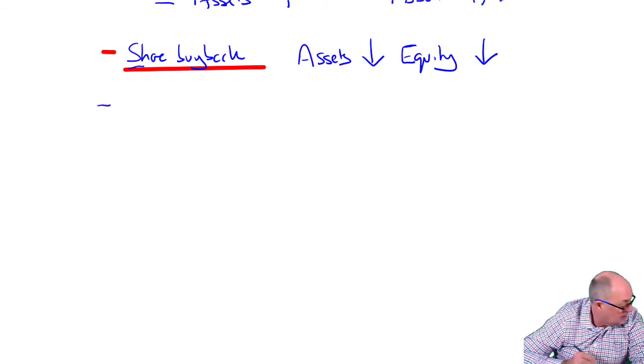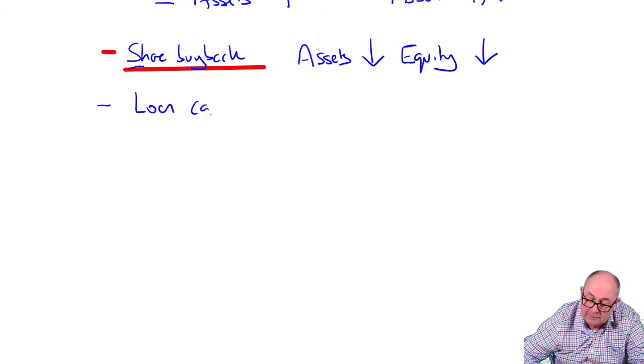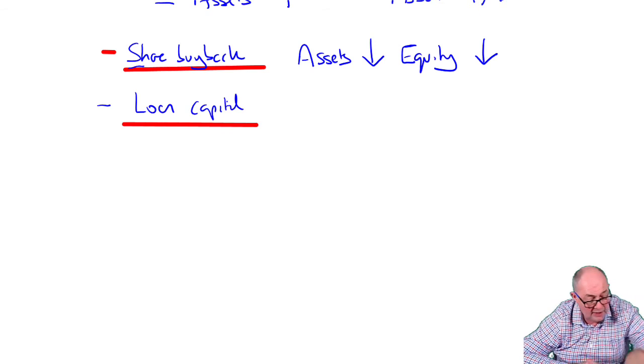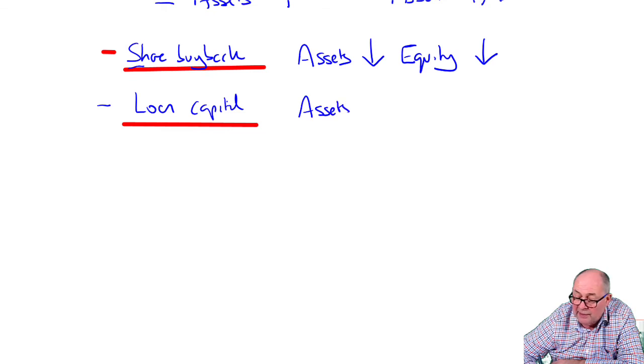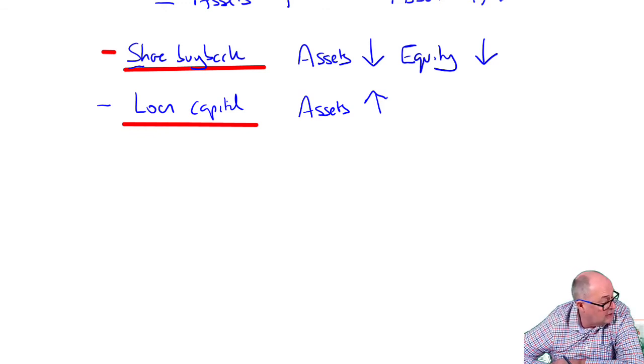We've then got the issue of debt, the issue of the loan capital. When the loan is actually issued, that would cause the assets to increase. The double entry is debit asset cash, credit loan liability. None of this ratio is bringing liabilities in. We're not asked about the impact on net assets, but just assets. So the only thing that would change in those calculations is the assets would get greater.